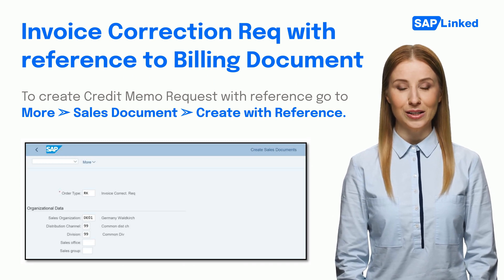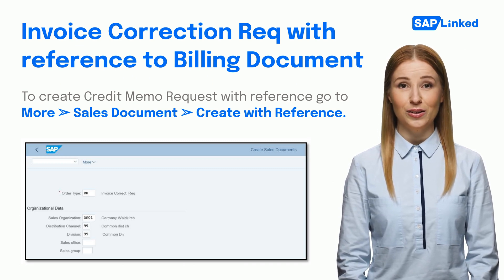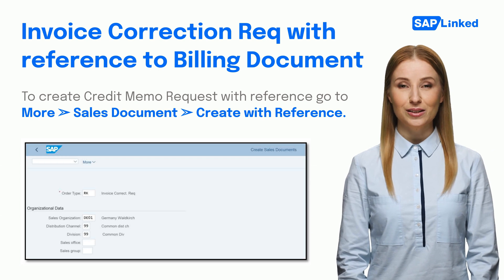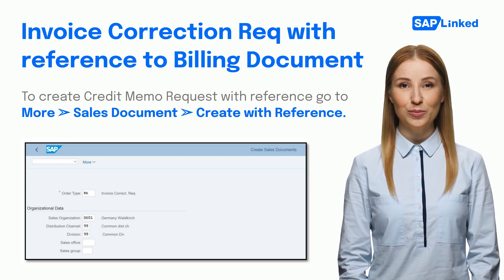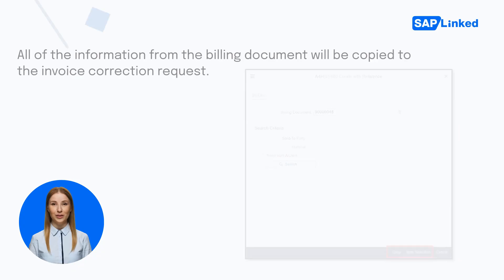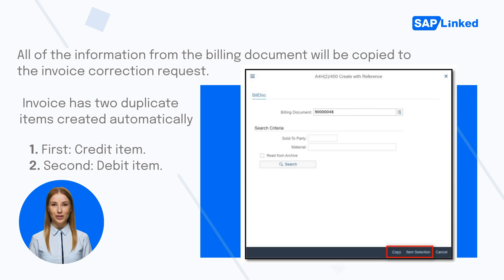Choose order type field 'Invoice Correction Request', R key, and enter sales organization, distribution channel, division, and organization data. To create a credit memo request with reference, go to More > Sales Document > Create with Reference. Enter the invoice number for which you want to create the invoice correction, then click the Copy or Item Selection button at the bottom. All of the information from the billing document will be copied to the invoice correction request.